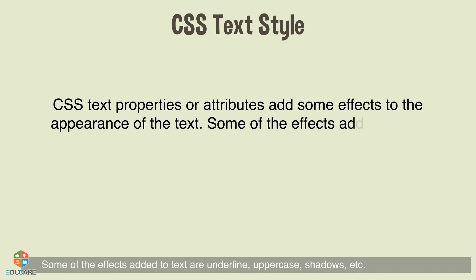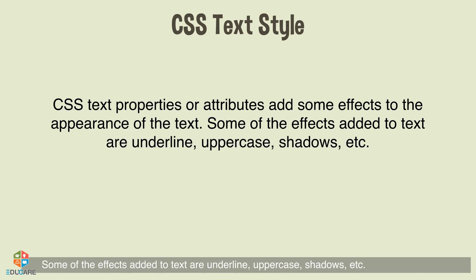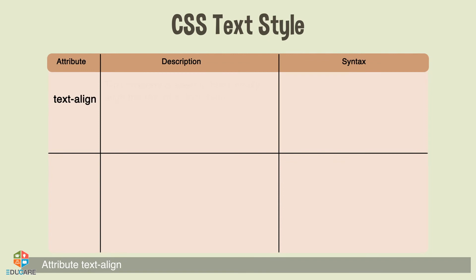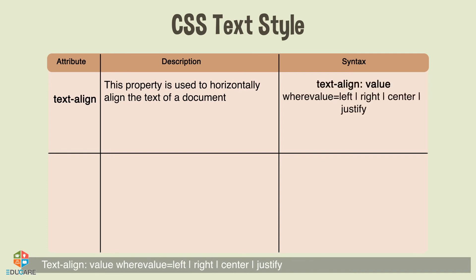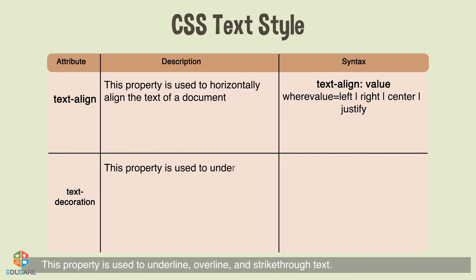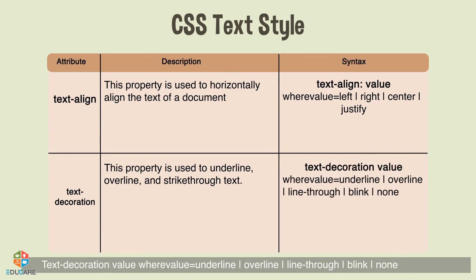CSS Text Style: CSS text properties add effects to the appearance of text, such as underline, uppercase, shadows, etc. The text-align property is used to horizontally align the text of a document; its value can be left, right, center, or justify. The text-decoration property is used to underline, overline, and strikethrough text; its value can be underline, overline, line-through, blink, or none.